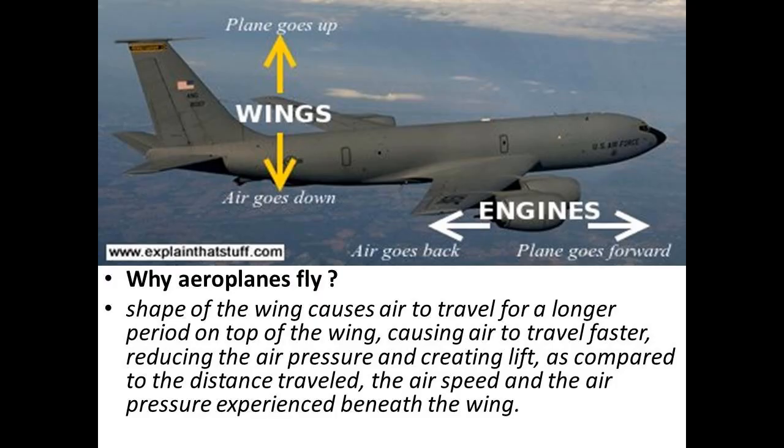Another example is the aeroplane — how does it fly? It is because of the shape of the wing. The shape of the wing causes the air to travel a longer path on top of the wing, causing air to travel faster, reducing air pressure and creating lift, compared to the air speed and pressure experienced beneath the wing.